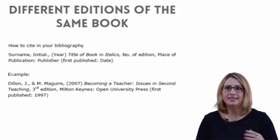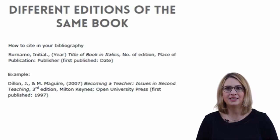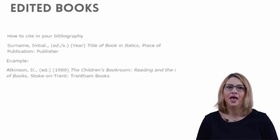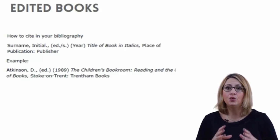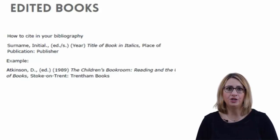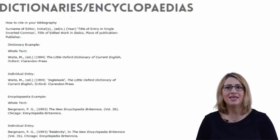In the case of different editions of the same book, cite sources as you would a book but include details of which edition you are looking at after the title, and include details of the first edition only in brackets at the end. An edited work is usually a collection of essays or other short pieces of writing such as short stories, plays, interviews, etc., written by different authors but compiled into one volume by the editor. Edited works are cited in the same way as books but listing the editor as the author. When referencing dictionaries, cite the whole text as any other edited work. Cite individual entries in dictionaries and encyclopedias by the editor, and for encyclopedias only include the volume number if there are multiple volumes.